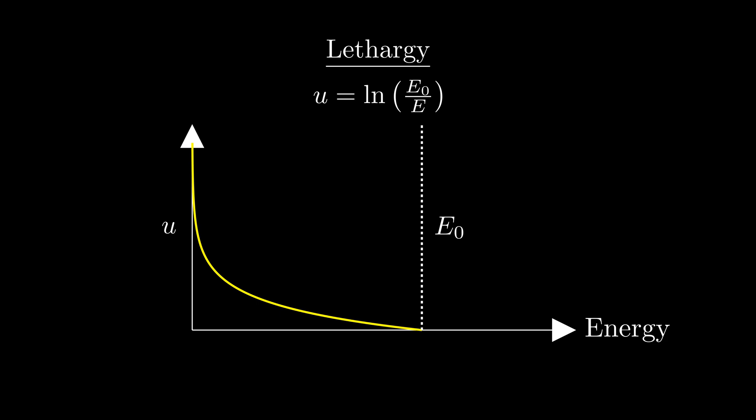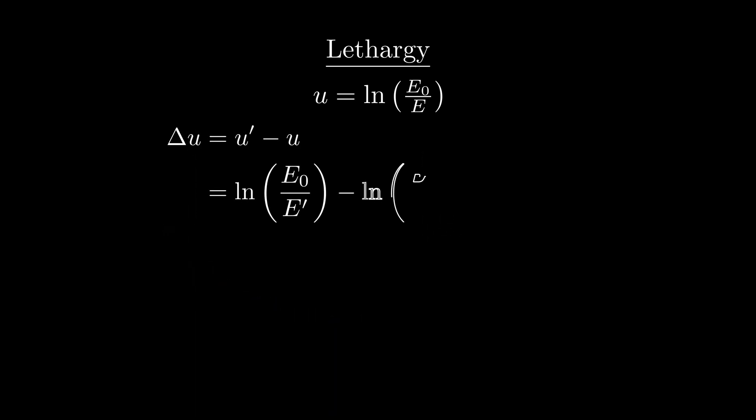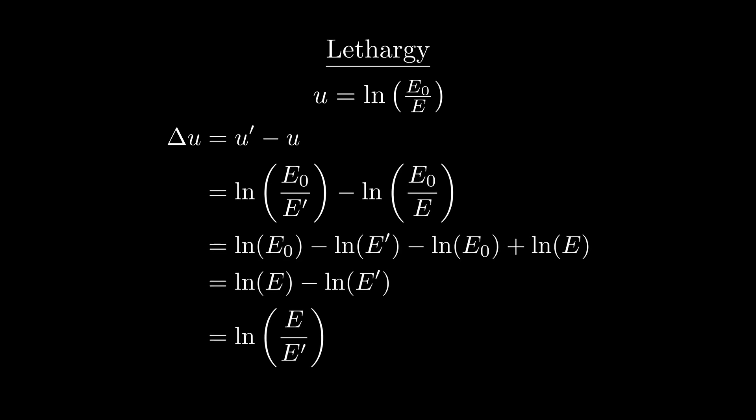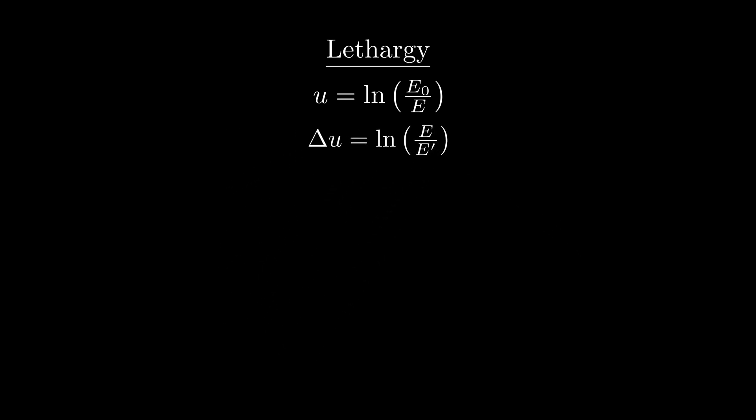To show this, let's take a look at how changes in energy correspond to changes in lethargy. Now with a little algebra, we can show that going from E to E prime results in a change in lethargy equal to the natural log of E over E prime. Now recall that our minimum change in energy is when E prime is equal to E, and this results in no change in lethargy, which makes sense.